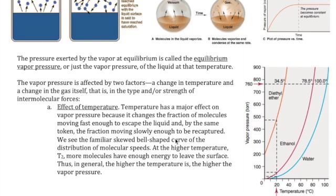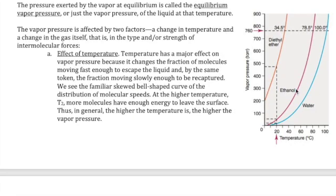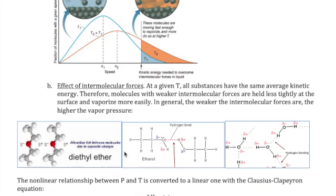The second factor that affects vapor pressure is the strength of the intermolecular forces that holds the liquid state. It would make sense that if the IMF is weaker, then it will be easier for the liquid to escape and become gas, which makes the vapor pressure higher. In this same plot, we see three different liquids: diethyl ether, ethanol, and water. The structures of these species are shown down here.